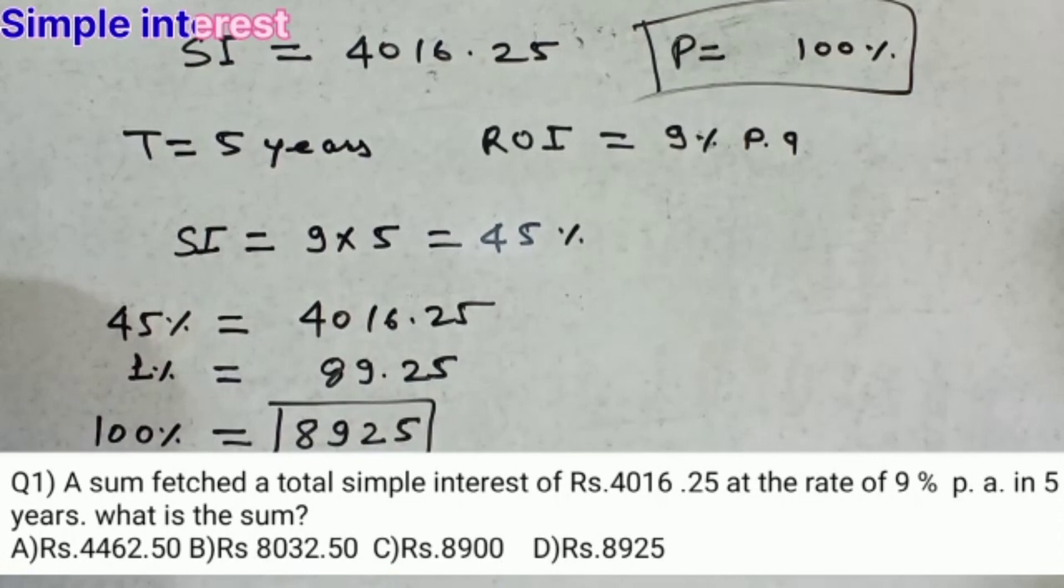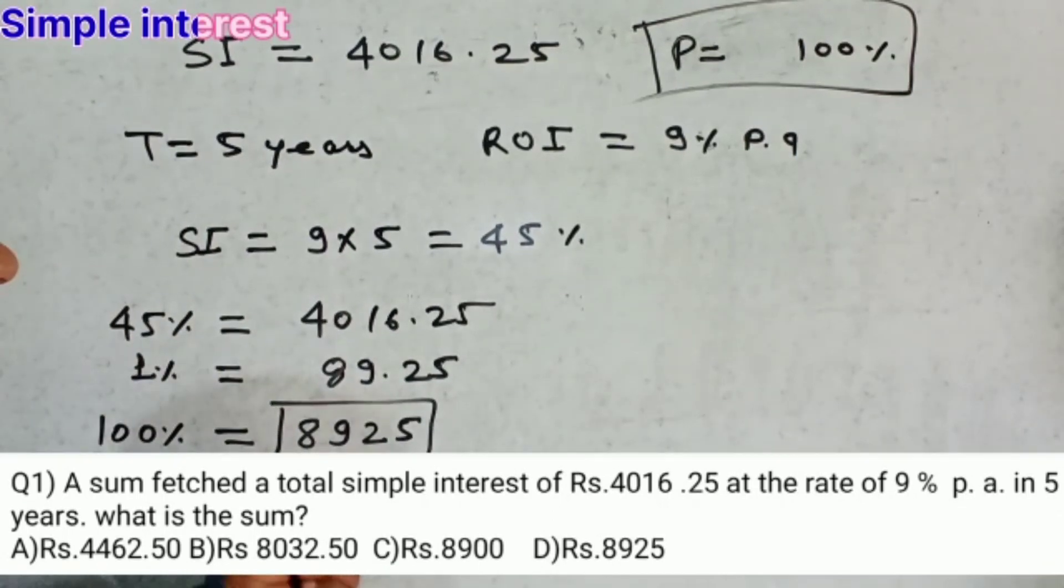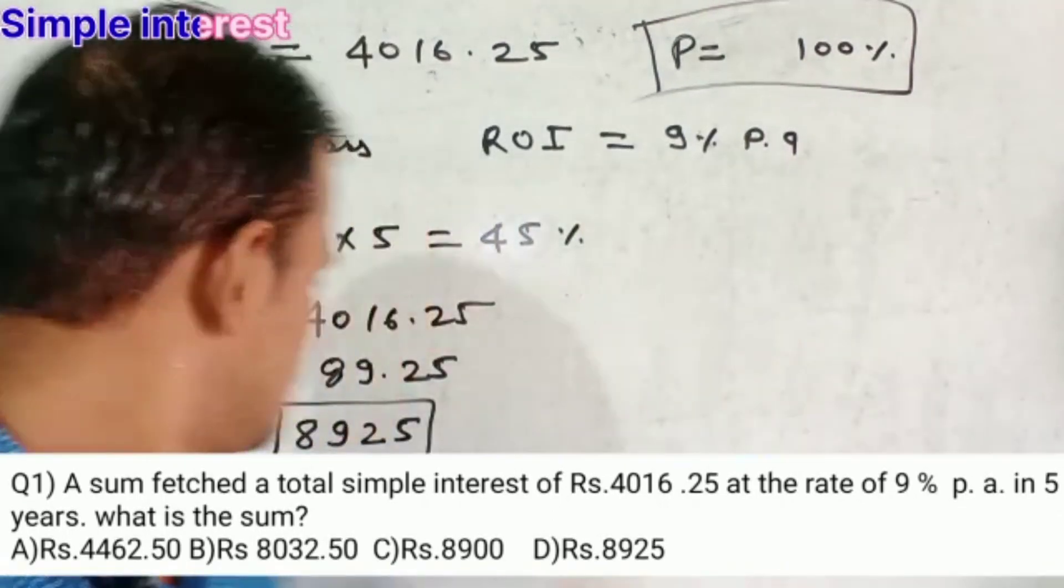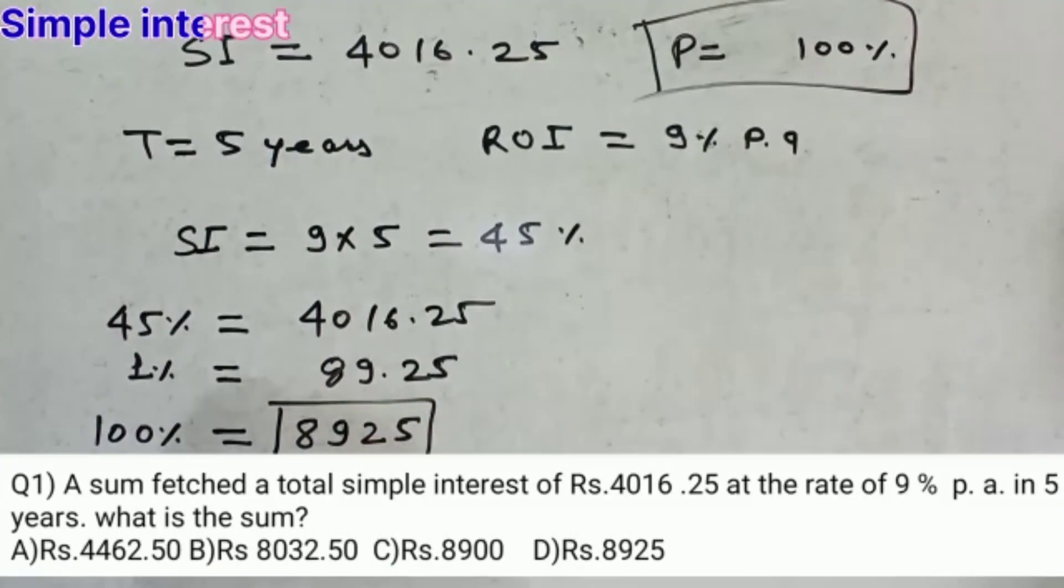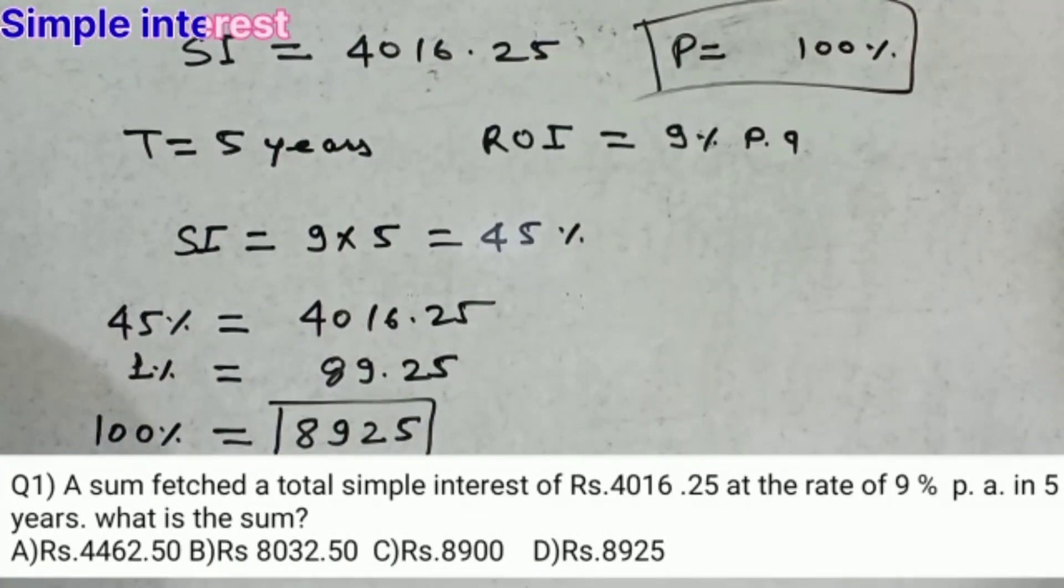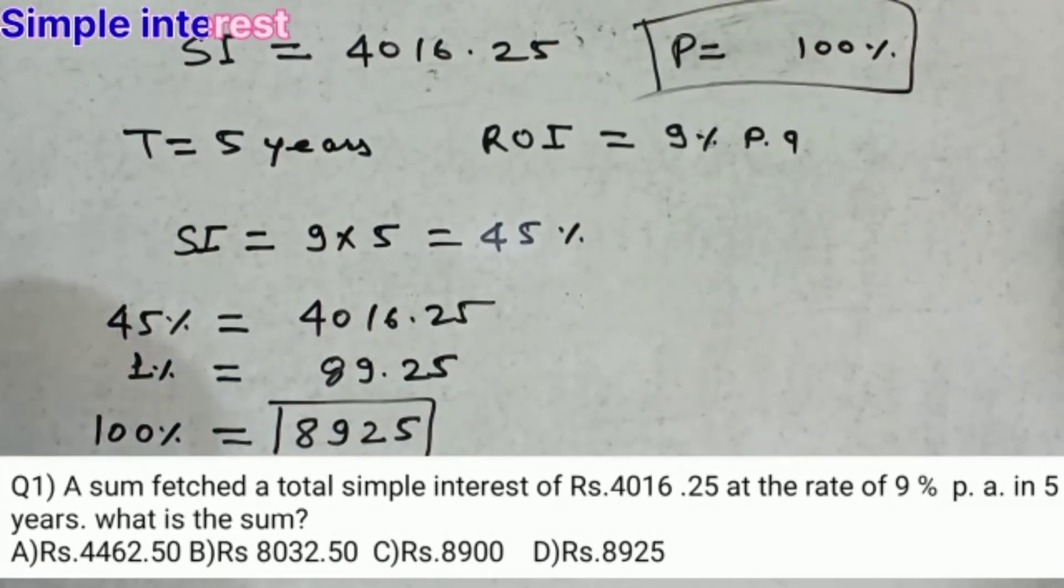So the sum and the principle is 8,925. Which option is the correct option? Option D is the correct answer.